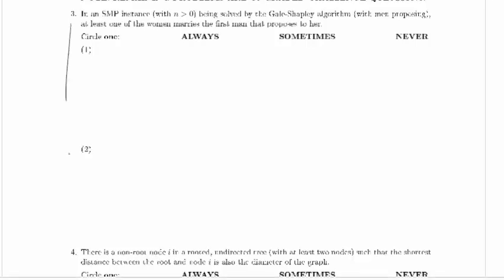We're solving true, false, or sometimes true and sometimes false questions. In an SMP instance with n greater than zero, so there's at least one man and one woman, being solved by the Gale-Shapley algorithm with men proposing, at least one of the women marries the first man that proposes to her.